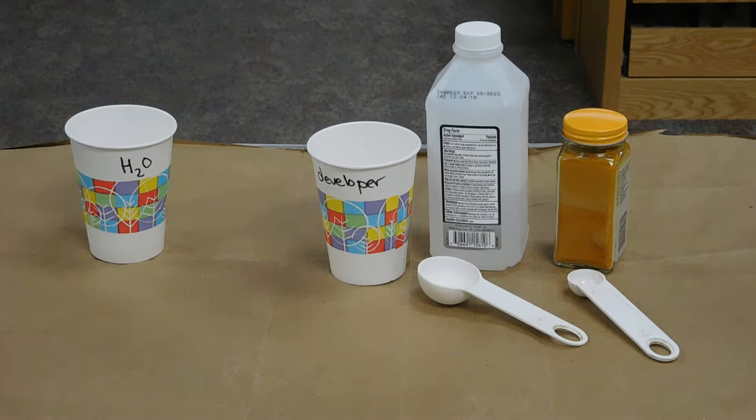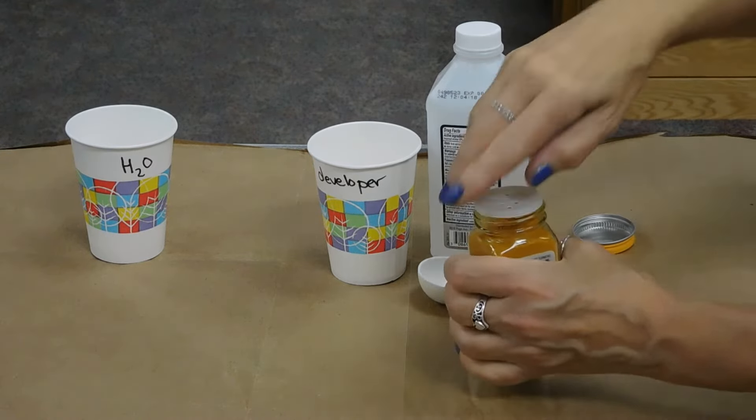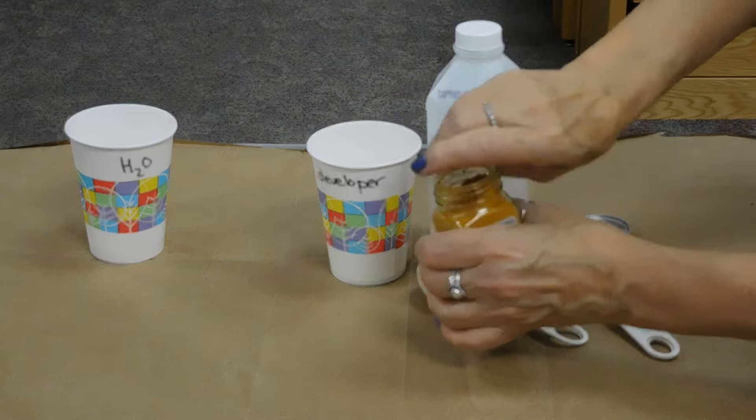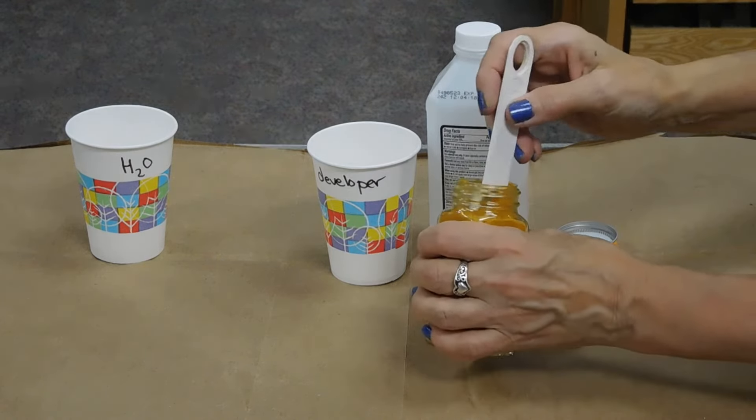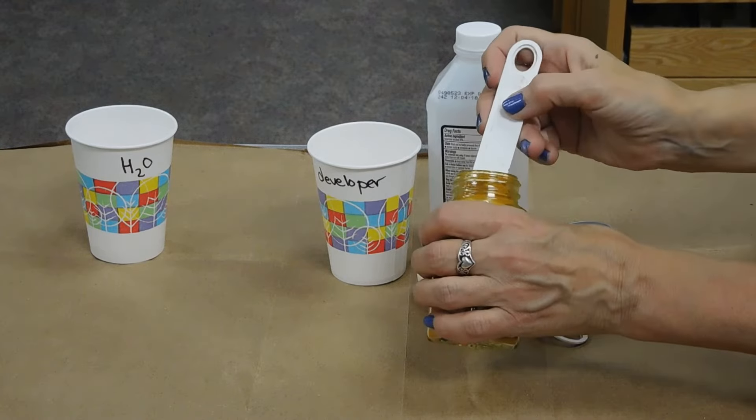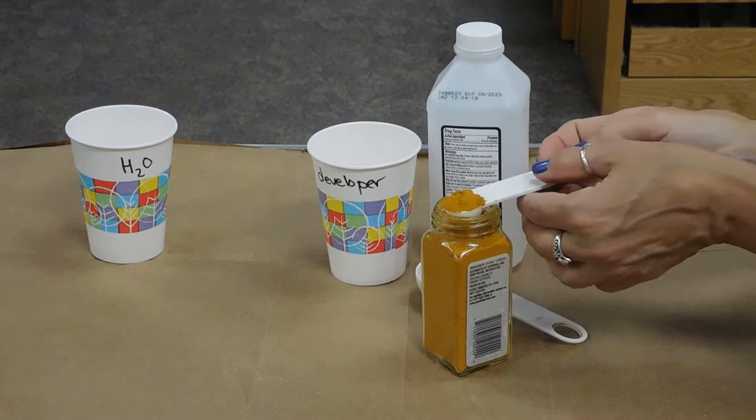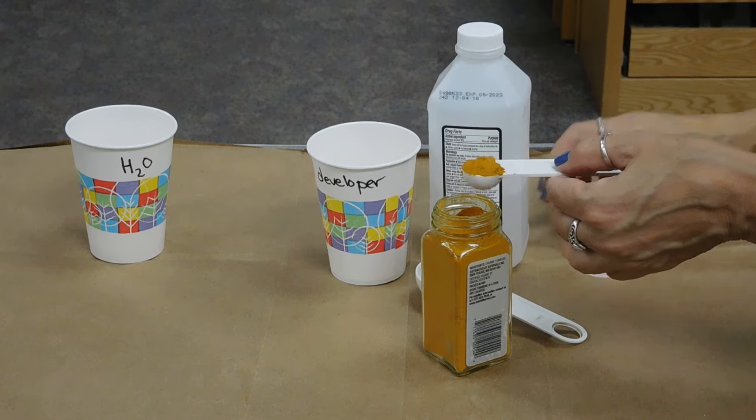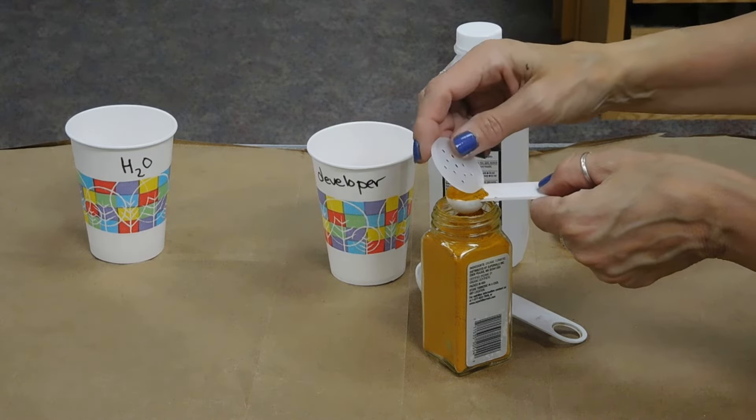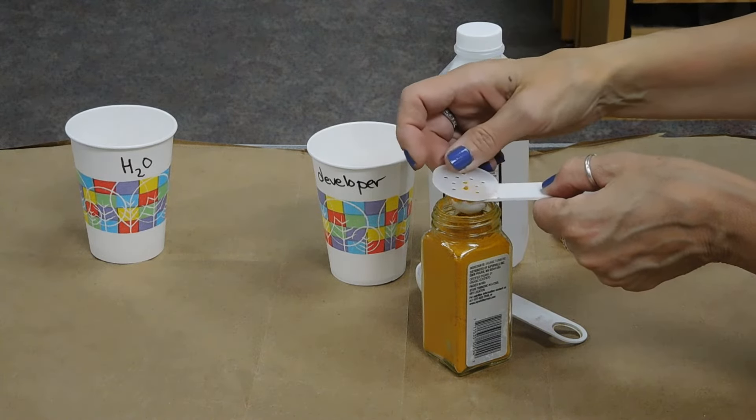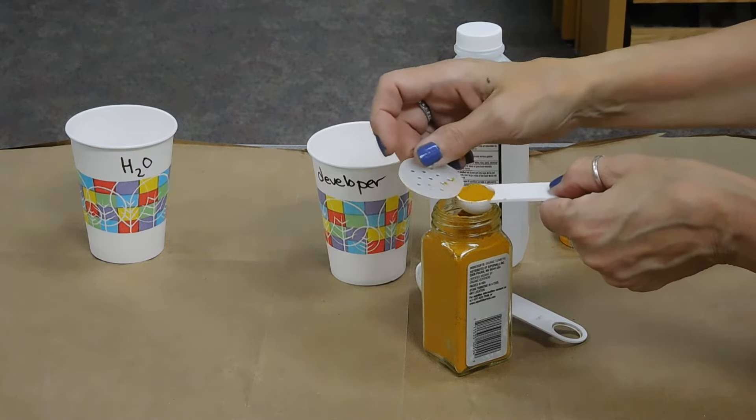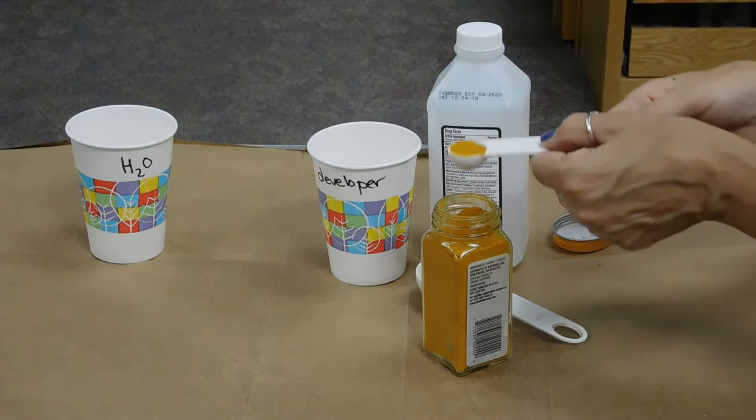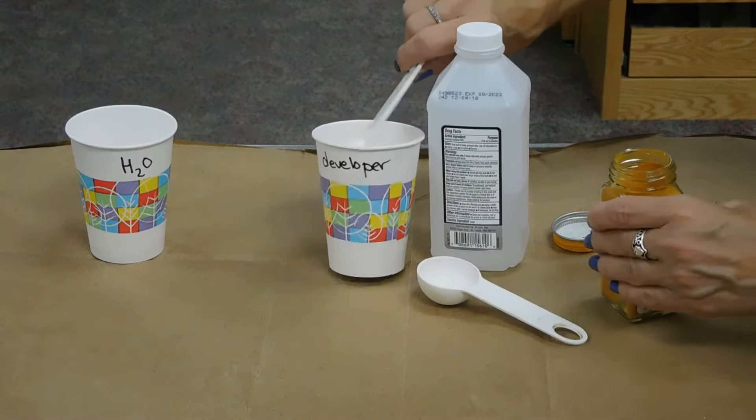Now we're going to prepare what I like to call the developer. So we're going to open the turmeric. Pop this plastic off the inside. And we need a half teaspoon of turmeric. And the baking soda was a lot easier to deal with. So to make sure we've got the right amount I'm just going to use the flat edge of that. And that goes right into the cup marked developer.